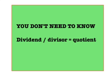You don't need to know that the numbers in a division sum are called the dividend, the divisor and the quotient, in terms of the dividend divided by the divisor equals the quotient. You don't need to know that, but you might like to know what the words are.